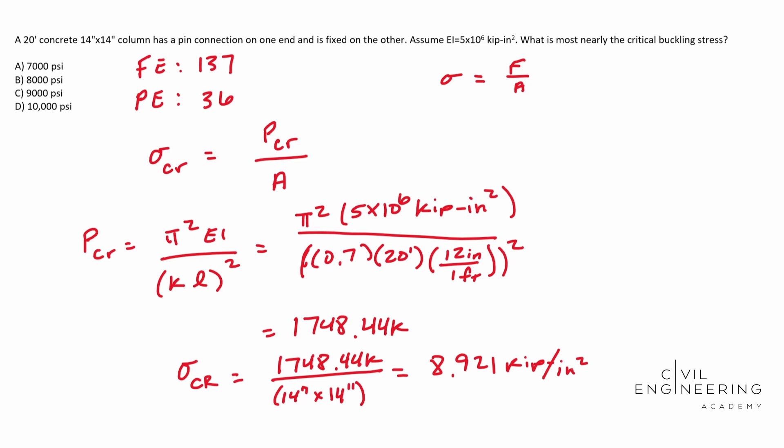Something we noticed about this problem is our answer bank is actually in PSI, which means pounds per square inch. But we know that one kip equals 1000 pounds. So we can understand this is actually very close to 9,000 pounds per square inch, which is PSI. If we go up to our answer bank, that's going to be C.